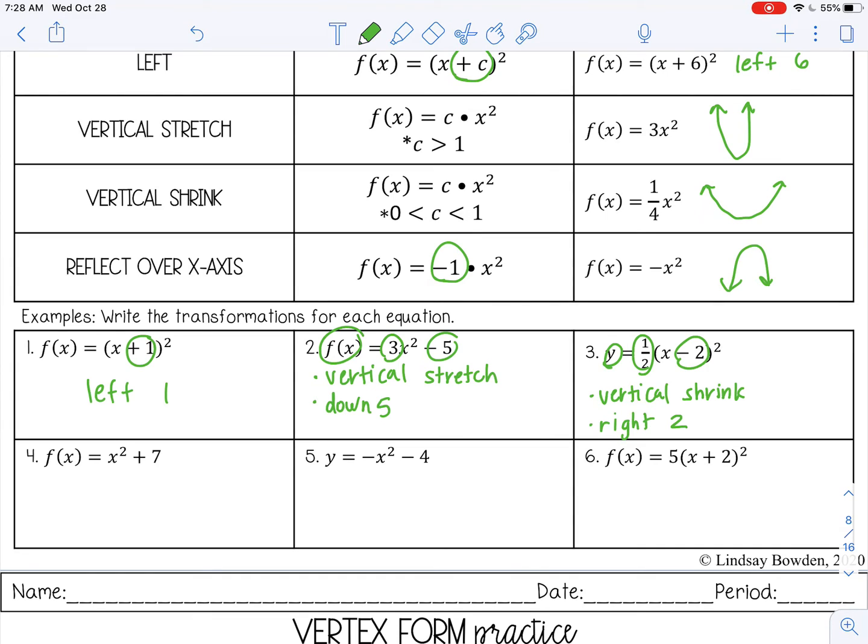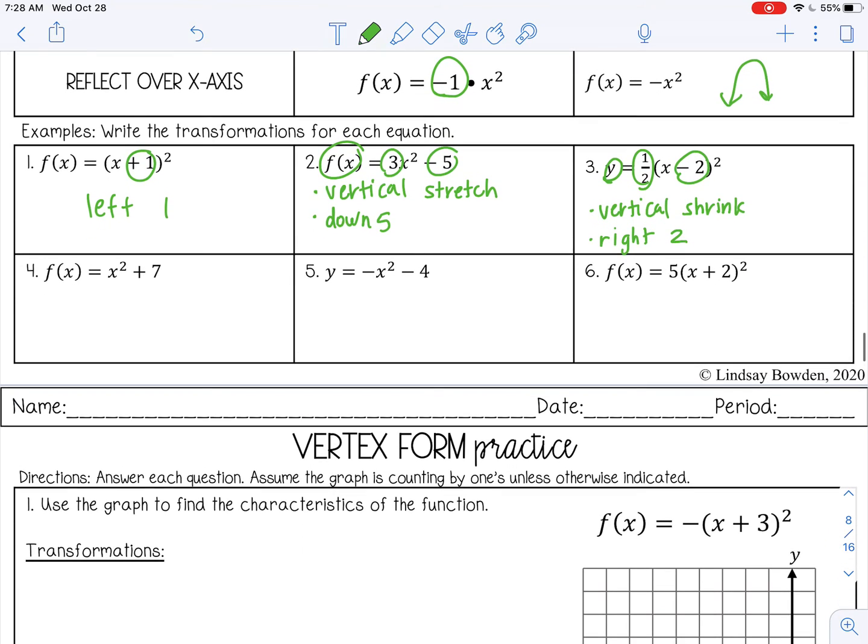Pause the video and try 4, 5, and 6 by yourself. Let's see how we did. Number 4, you should have gotten up 7. Number 5, reflect over the x-axis and down 4. And then 6, a vertical stretch, that 5, and then left 2.